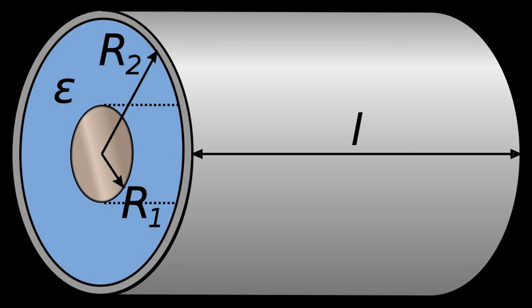Capacitance is the ratio of the change in an electric charge in a system to the corresponding change in its electric potential. There are two closely related notions of capacitance: self-capacitance and mutual capacitance. Any object that can be electrically charged exhibits self-capacitance. The notion of mutual capacitance is particularly important for understanding the operations of the capacitor, one of the three elementary linear electronic components along with resistors and inductors.